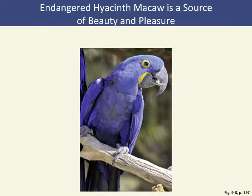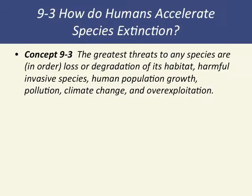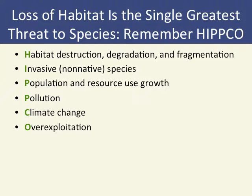The HIPCO acronym explains how humans accelerate species extinction. HIPCO stands for Habitat destruction, Invasive species, Population growth, Climate change, and Overexploitation. The acronym is listed in order of impact — habitat destruction and fragmentation threatens species the most, while overexploitation is the least impactful of the five.